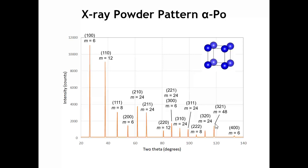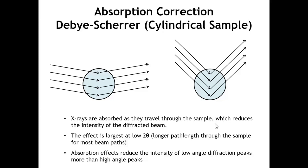Multiplicity is something you have to take into account when analyzing powder diffraction patterns — the computer programs do this for you. It's worth noting that if we go to a tetragonal crystal where A and C are different, then the 0-0-1 is no longer the same as the 1-0-0, and so the multiplicities change as we move to different crystal systems.